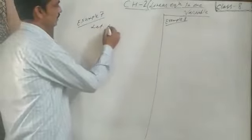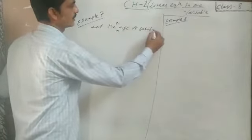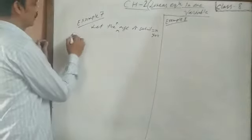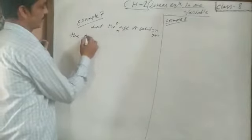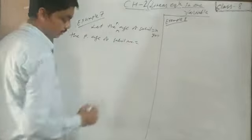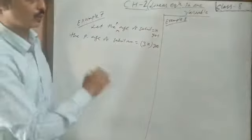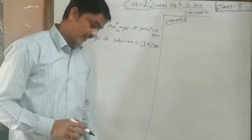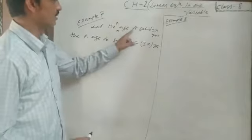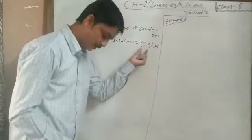Let the present age of Sahid be equal to X years. According to the given condition, the present age of Sahid's mother is 3 times that, so it is 3X years. After 5 years, the age of Sahid will be X plus 5 years, and after 5 years the age of Sahid's mother will be 3X plus 5 years.